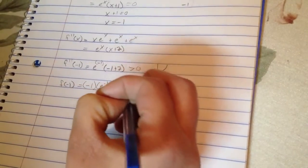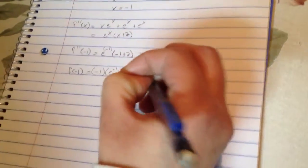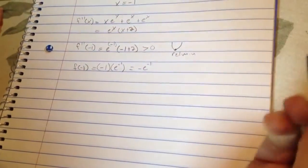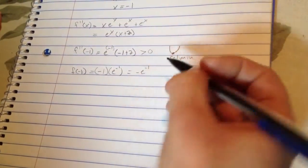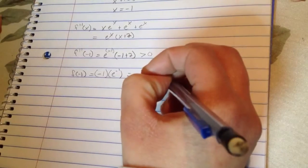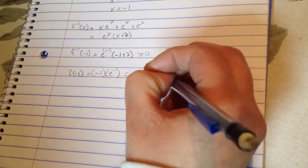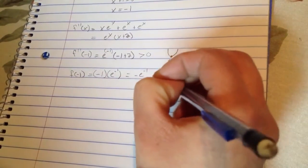So, that leaves us with negative e to the negative 1, which is anything to a negative power is supposed to be in the denominator. So, we are going to have negative 1 over e.